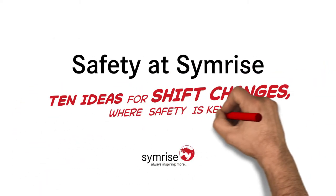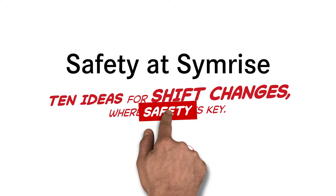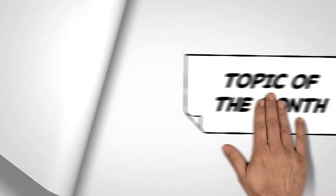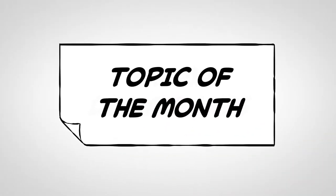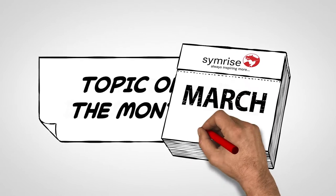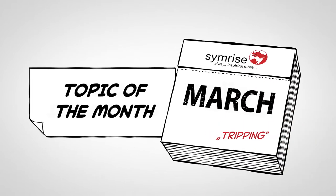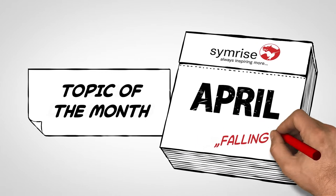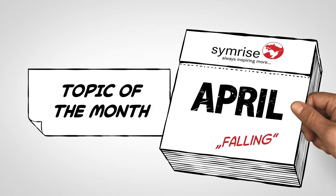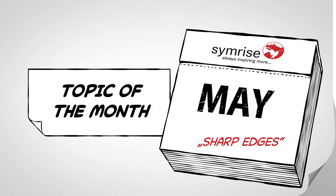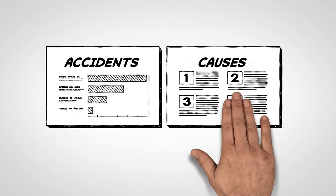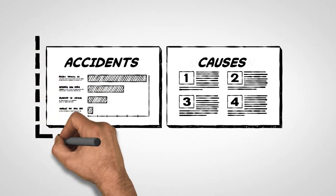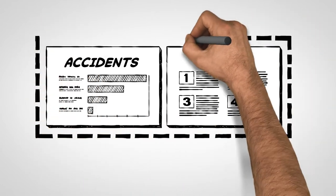Ten ideas for shift changes where safety is key. Choose a topic each month: tripping, slipping, falling, stairs, corners, sharp edges, and more. Each topic is the spotlight for four weeks, increasing awareness. Present your monthly accident statistics with causes.